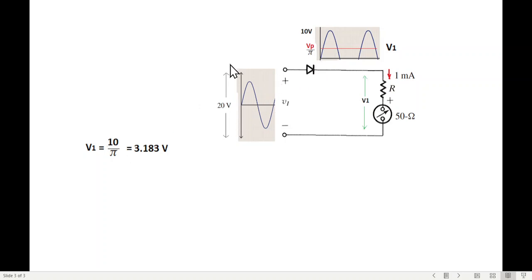this is 20 peak to peak, that means half of it is 10 volt. So 10 volt is V peak divided by pi. So V1 is 3.183 volt.